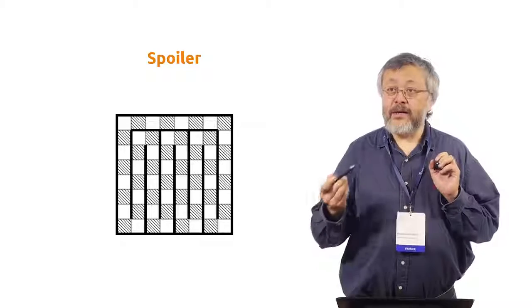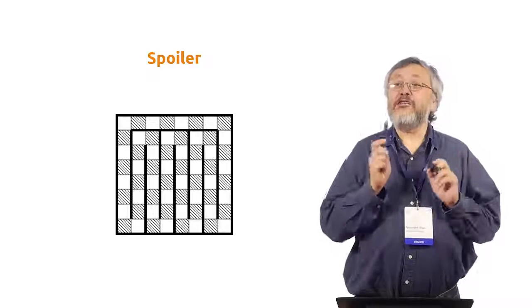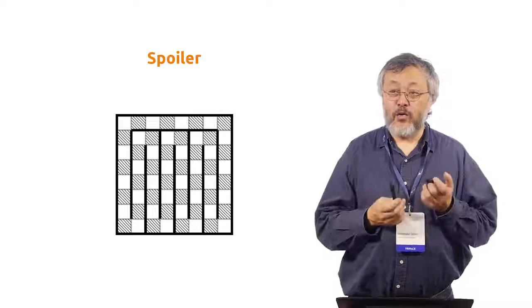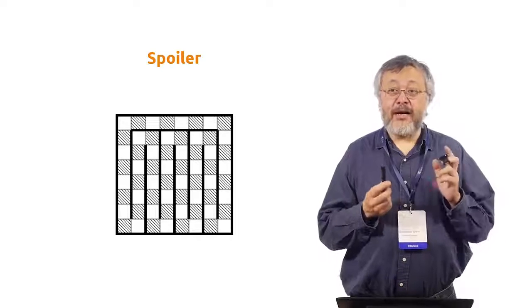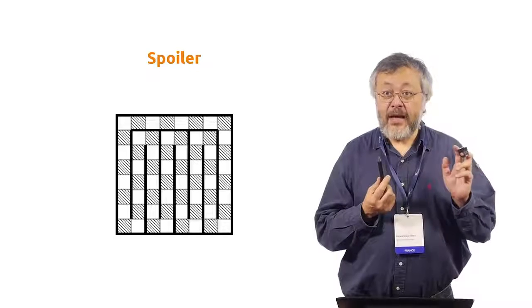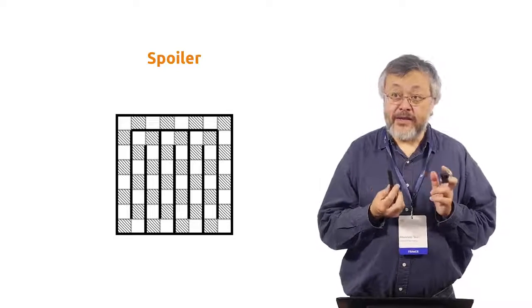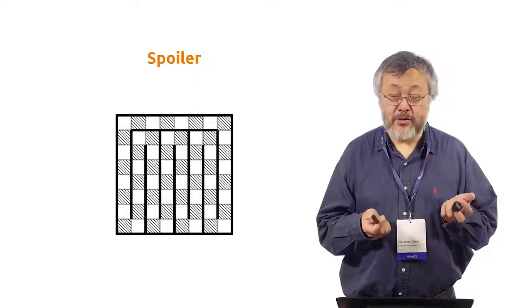So why this snake, there is a snake going like this. So why this snake? What is the connection of the snake with our problem? So we cut two cells of different colors, black and white, and we want to tile the rest with the dominos. How can the snake help us? Do you see this?